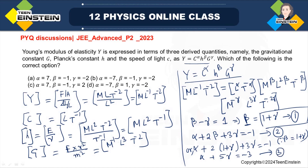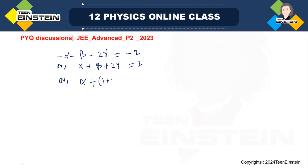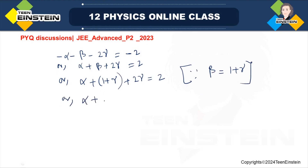If I compare the powers of T from both sides, I will get another equation: minus alpha minus beta minus 2 gamma equals minus 2, which simplifies to alpha plus beta plus 2 gamma equals 2. Putting the value of beta — beta equals gamma plus 1 — I get alpha plus 3 gamma equals 1. Let us call this equation number 4.